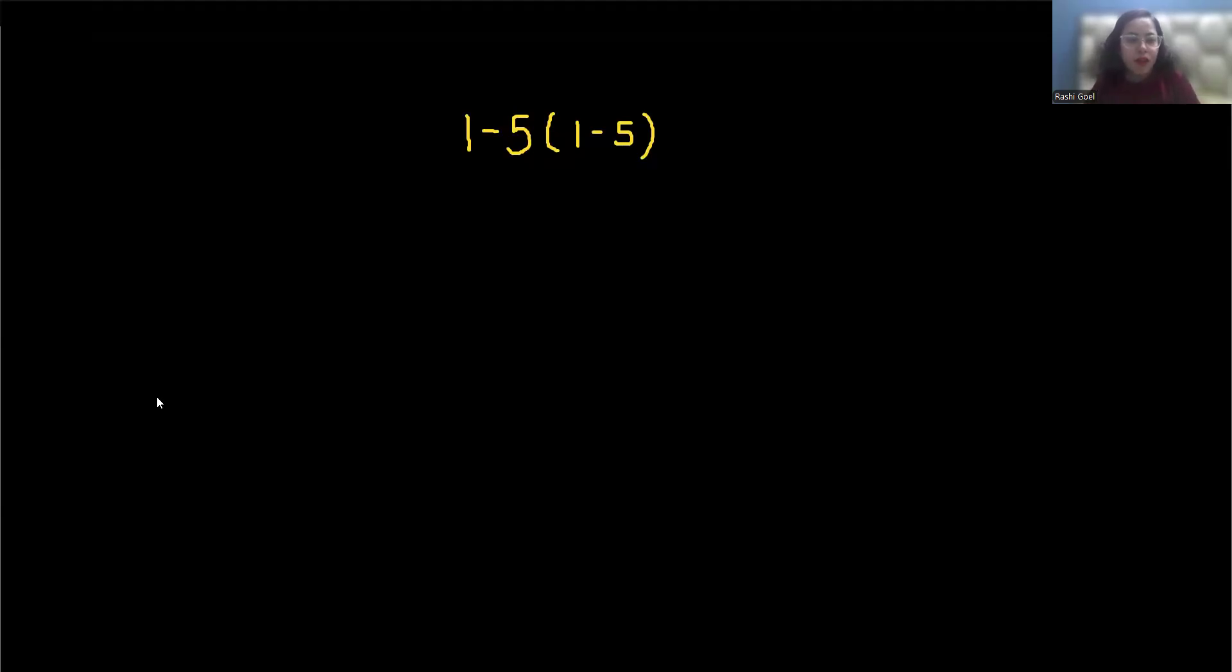Hello everyone, we have given an expression: 1 minus 5 bracket 1 minus 5. So 1 minus 5 is just minus 4, and again here we have 1 minus 5 that is minus 4, and minus 4 times minus 4 gives 16. But this answer is not correct because according to the order of operation...